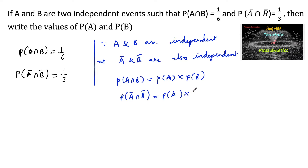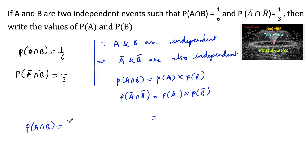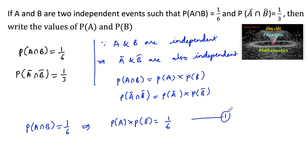So it is given that P(A∩B) = 1/6. Since A and B are independent, we can write P(A)·P(B) = 1/6. Let us label this as equation 1.